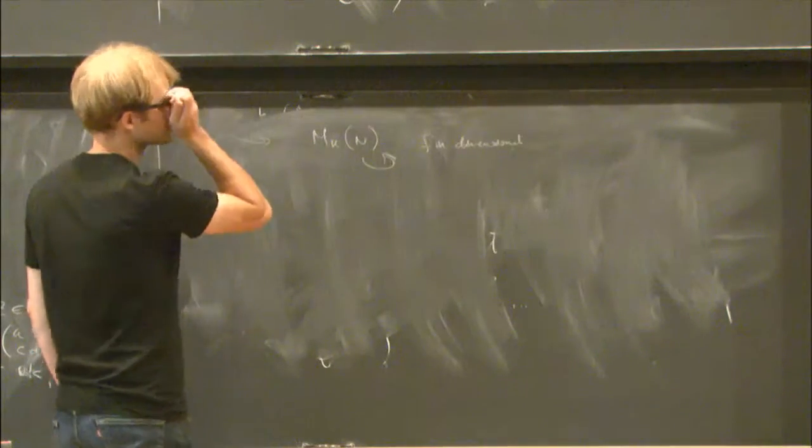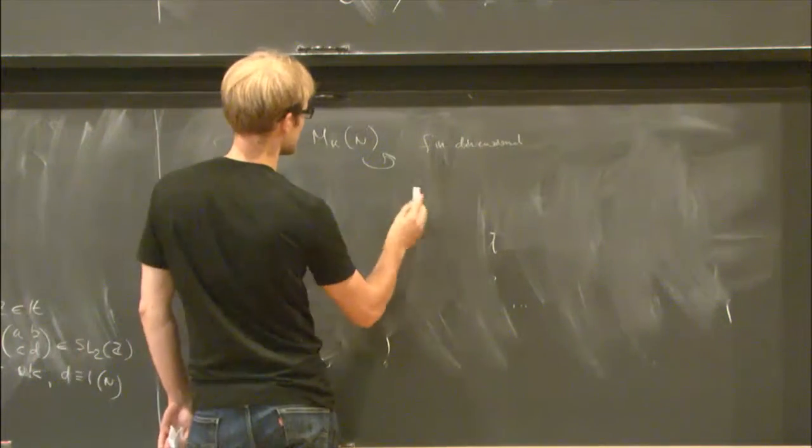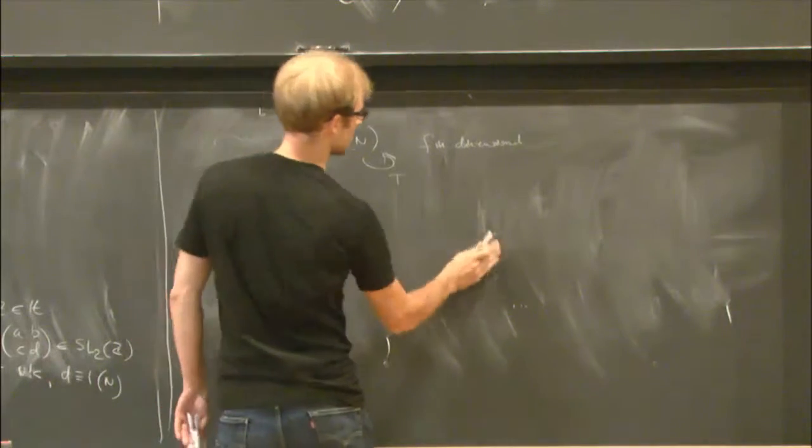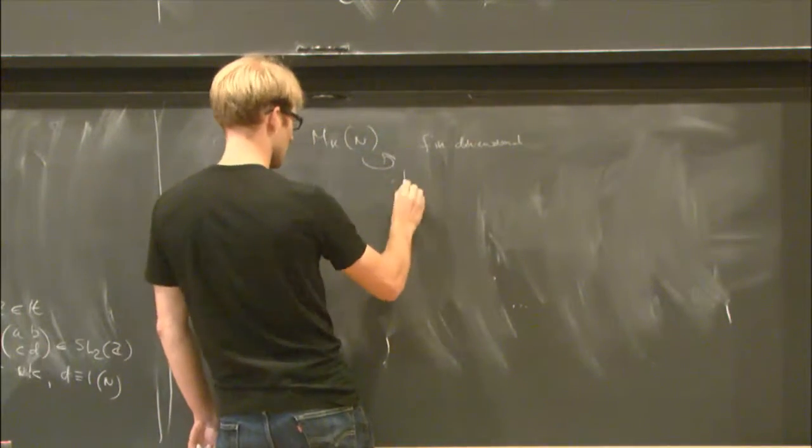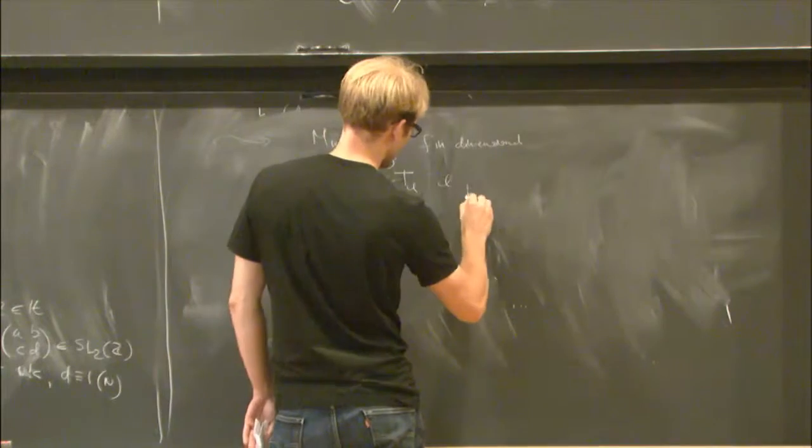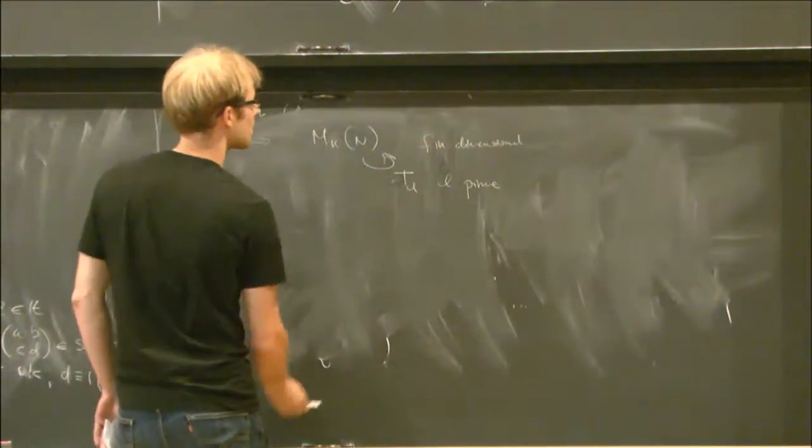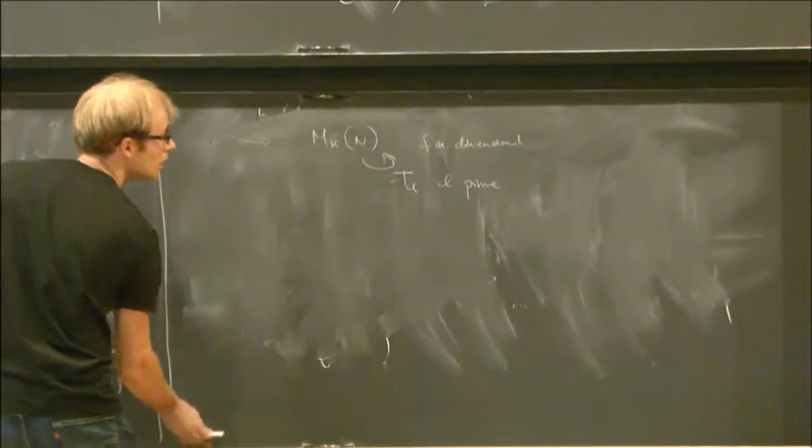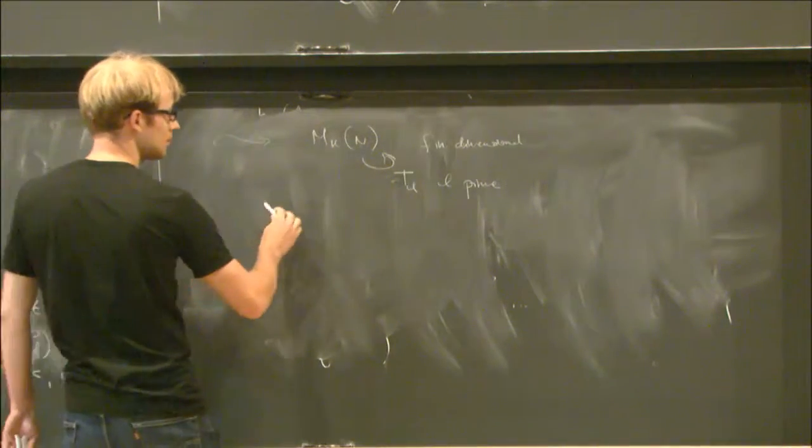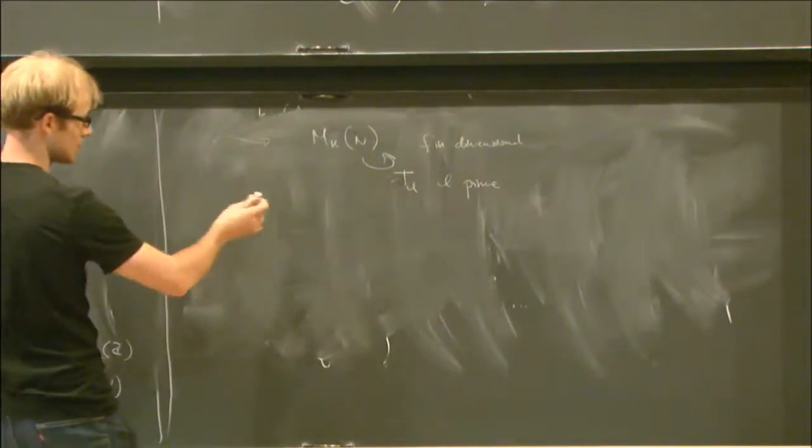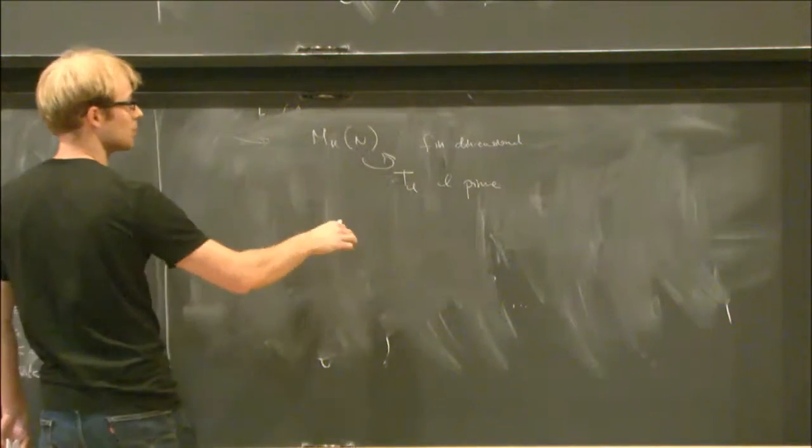and on this vector space, one can define certain linear operators, which I'll call T_l for l a prime, and these are simultaneously diagonalizable and they all commute with each other.